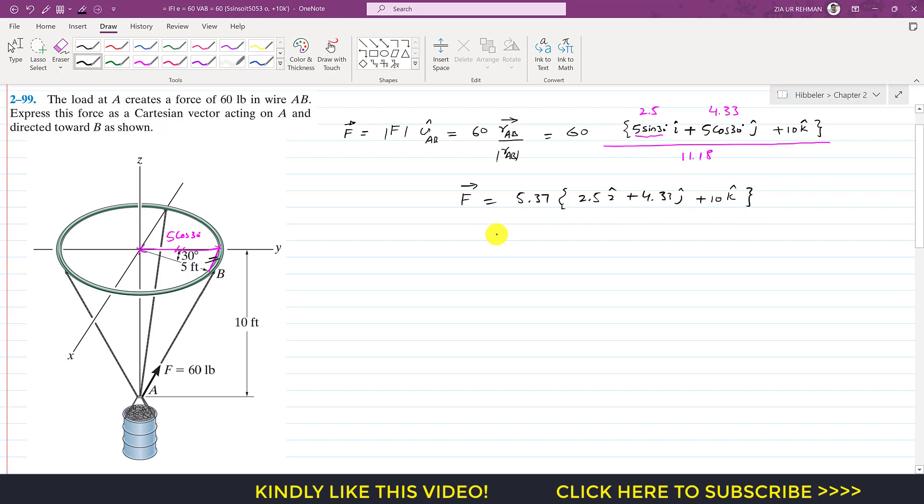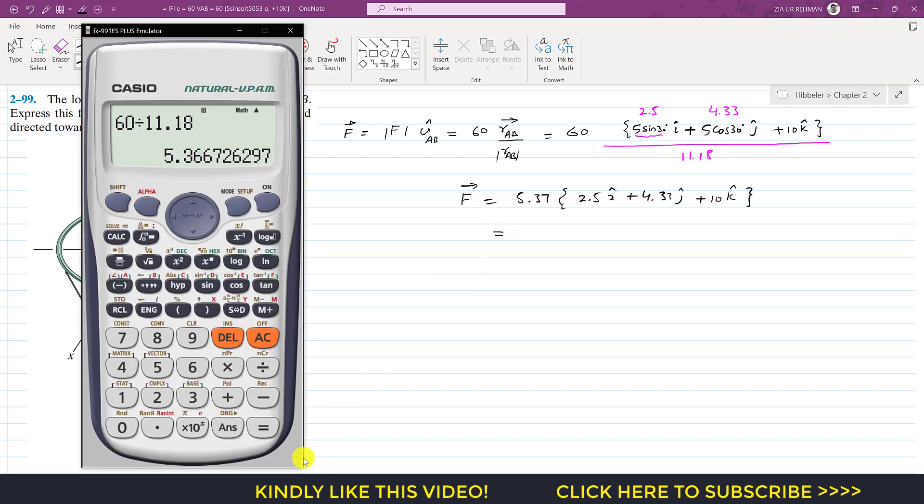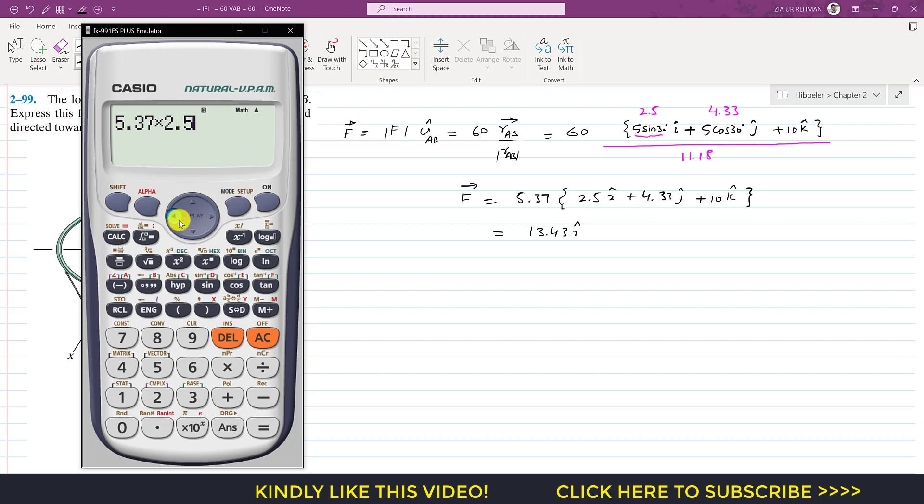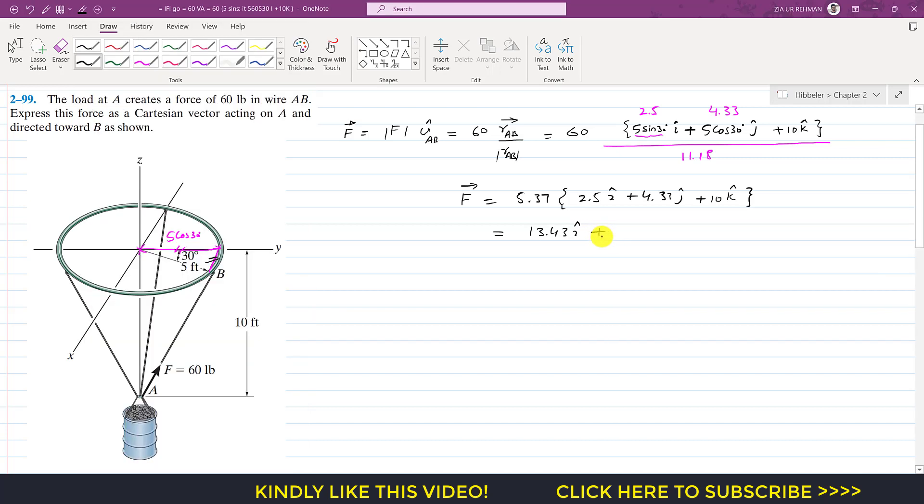Now if I multiply this: 5.37 times 2.5 gives me 13.43 i, and 5.37 times 4.33 gives 23.25 j.